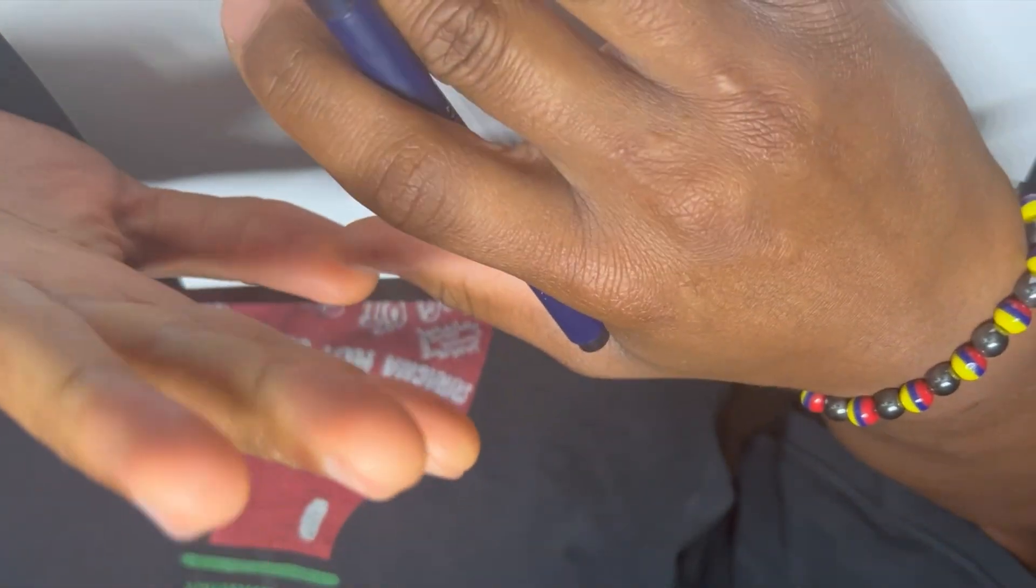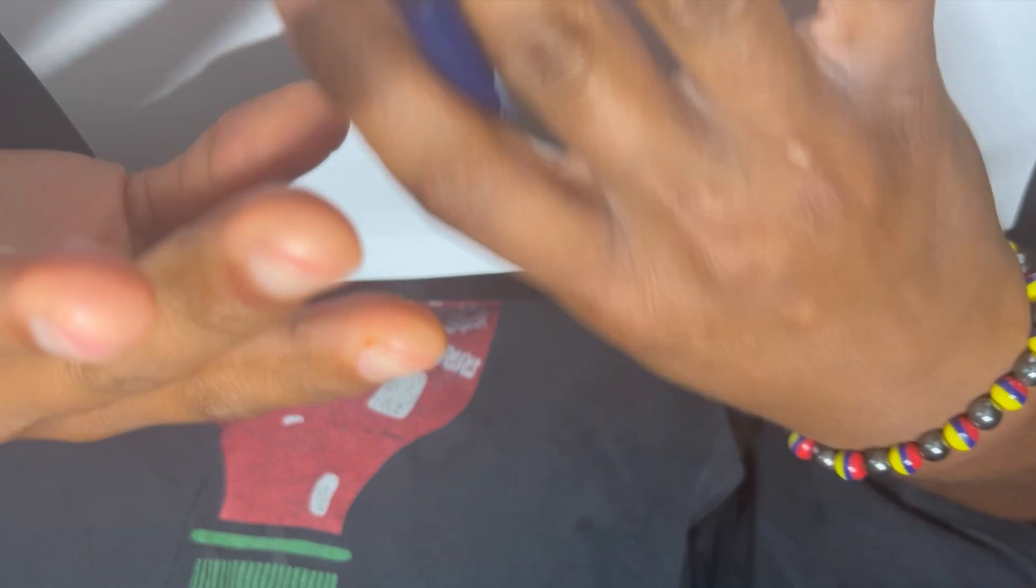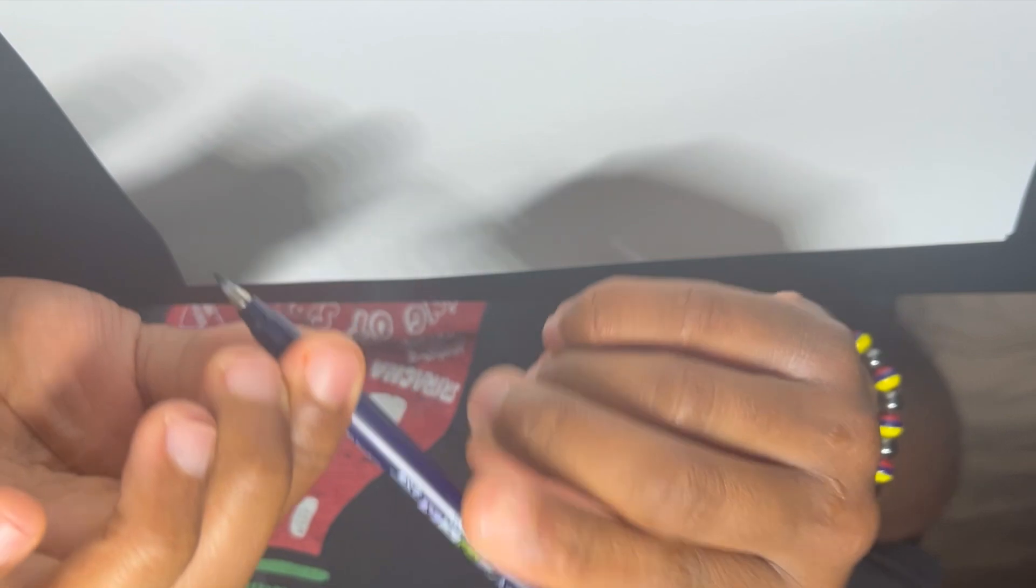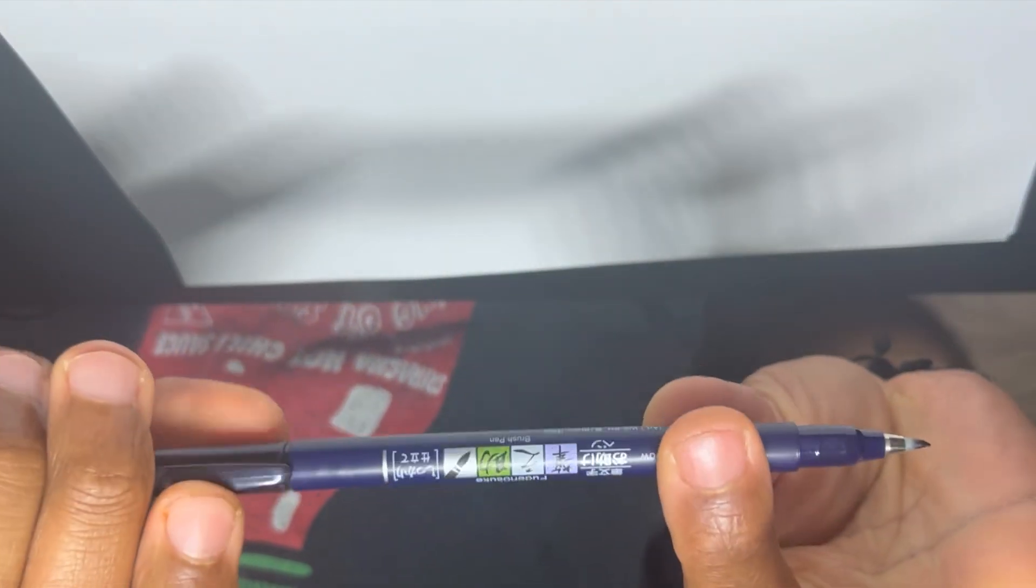With that said, let's go ahead and get into the video. Alright, this is tip number one - the proper grip on how to hold the pen correctly. The pen I'm using is a Tombow Fudenosuke brush pen. This is the hard tip and I believe they have a soft tip as well.